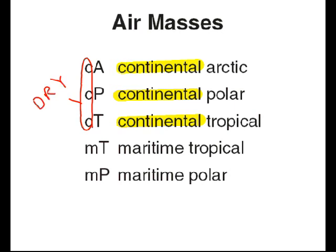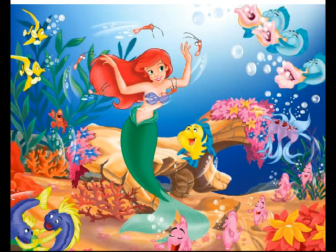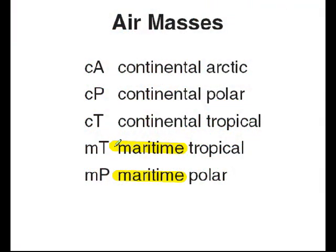The opposite is true when we look at the term maritime. When we see maritime, we think of marine animals — maritime means it formed over water, over an ocean or the Gulf of Mexico. So whenever we see an M, we think of that as being very humid air — moist. If you can remember that continental is land and maritime is water, then you're all set.